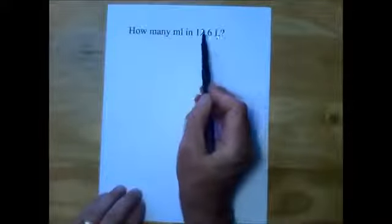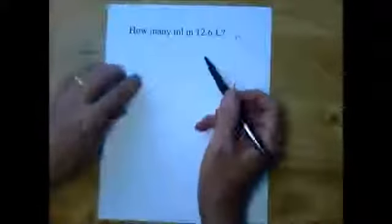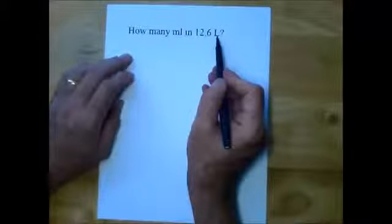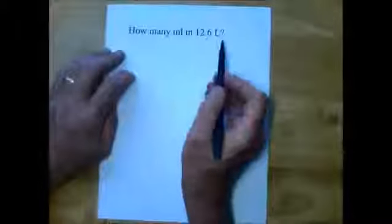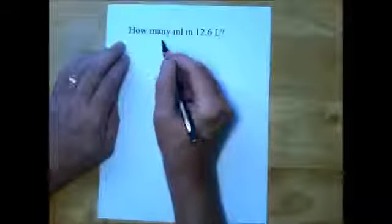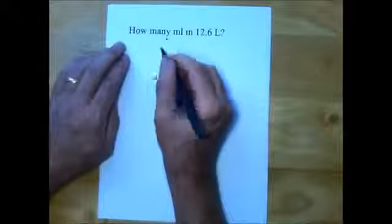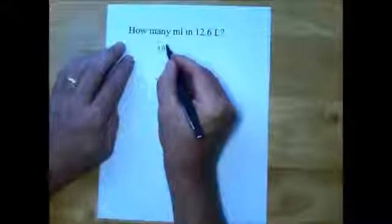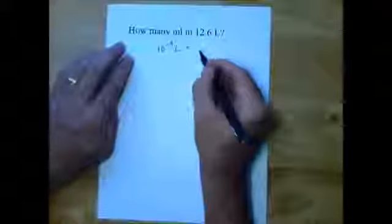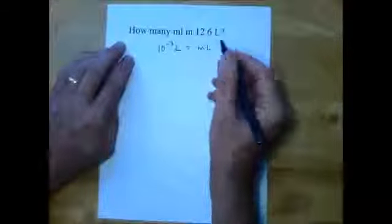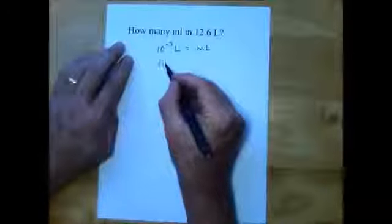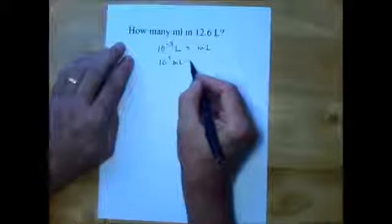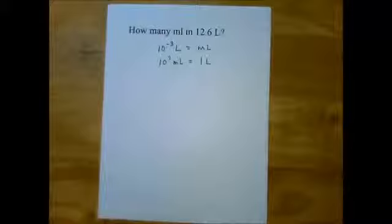How many milliliters are in 12.6 liters? We are trying to go from liters to milliliters, and we need to know the conversion factor. Looking back at our table, there are two conversion factors for milli to the base unit liters: ten to the minus third liters equals a milliliter, or ten to the third milliliters equals one liter. It just depends on which one you use — mathematically they mean exactly the same thing.